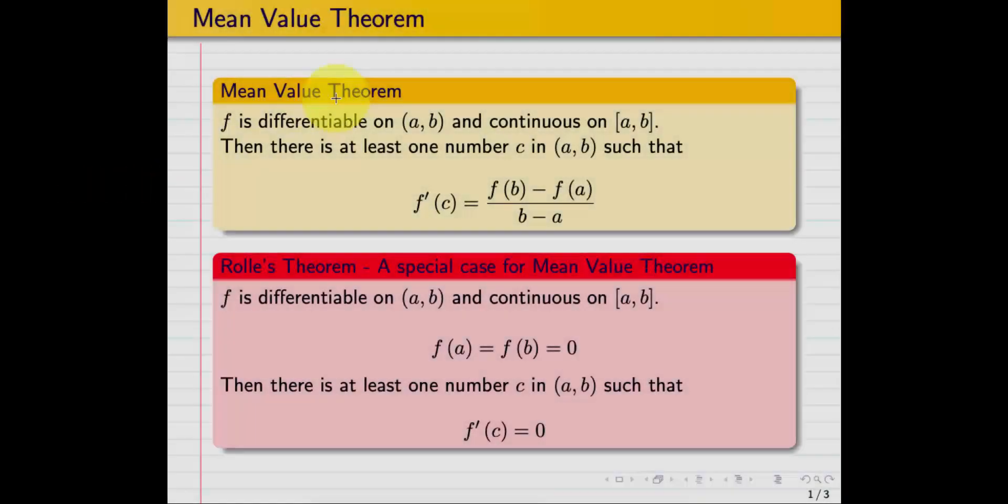Mean Value Theorem: f is differentiable on interval (a, b) and continuous on [a, b], then there is at least one number c in (a, b) such that f'(c) equals [f(b) minus f(a)] over [b minus a]. This is the gradient of the function at c.